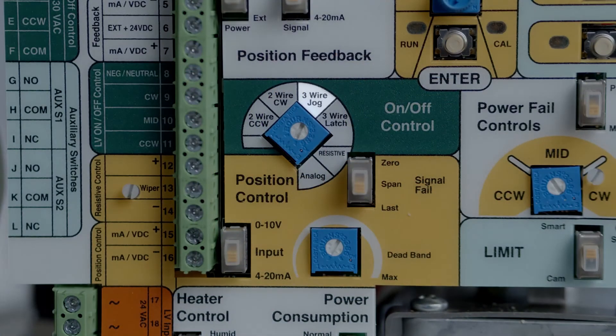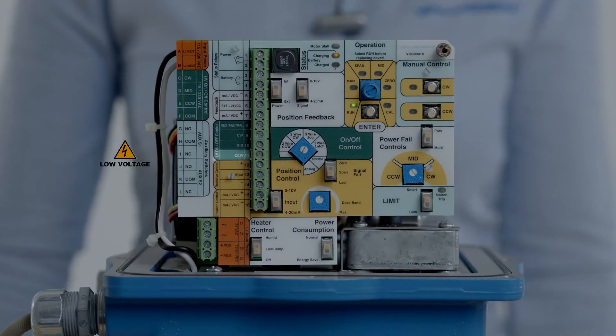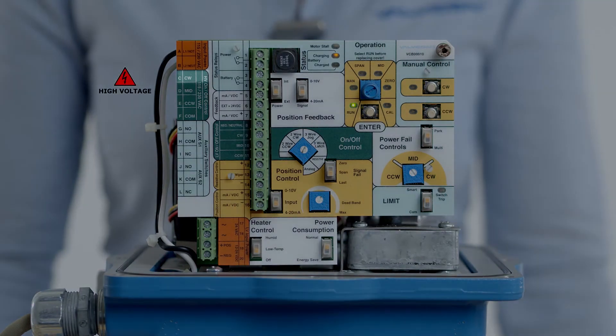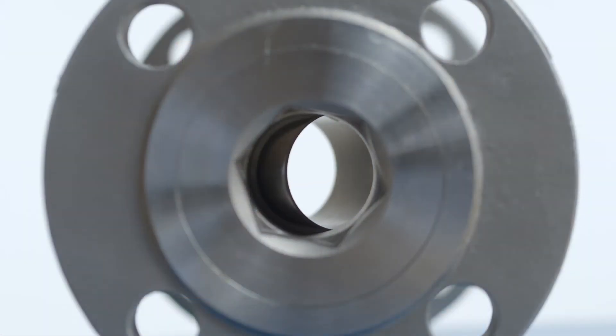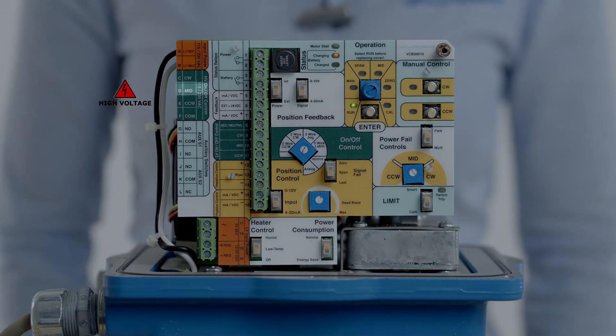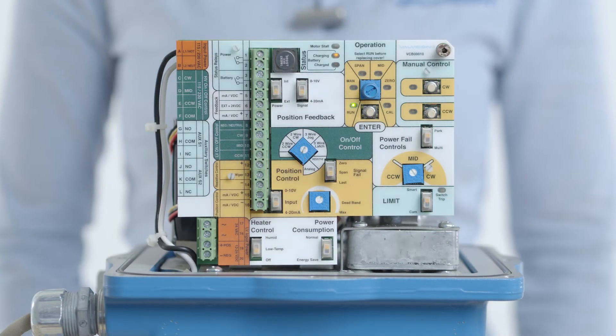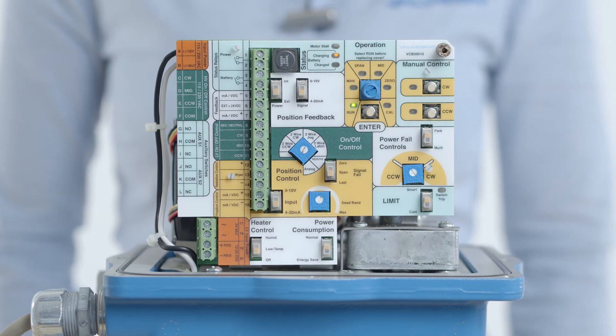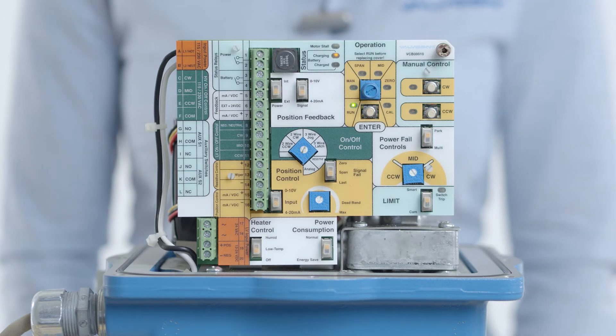In three-wire jog mode, the actuator will drive counterclockwise when the CCW control power is energized and will drive clockwise when the CW control power is energized. If control power is removed mid-travel, the actuator will stop in position. When the mid control power is energized, the actuator will drive to the programmed mid position. The mid position is optional and can be set anywhere inside of the clockwise and counterclockwise end of travel position settings to provide a three position, center off, or a dribble feed position.